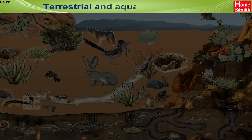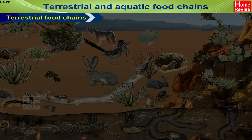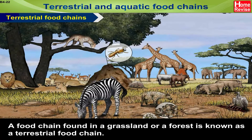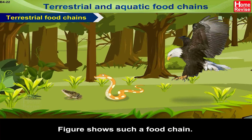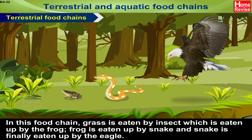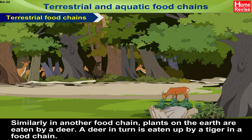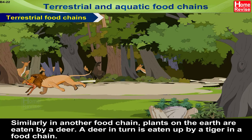Terrestrial and Aquatic Food Chains. A food chain found in a grassland or a forest is known as a terrestrial food chain. In this food chain, grass is eaten by an insect, which is eaten by a frog. The frog is eaten by a snake and the snake is finally eaten by the eagle. Similarly, in another food chain, plants on the earth are eaten by a deer, and the deer in turn is eaten by a tiger.